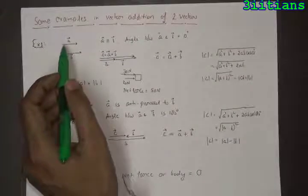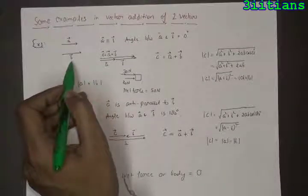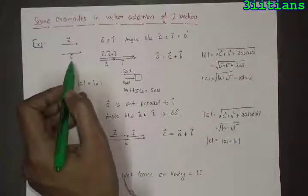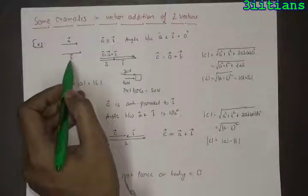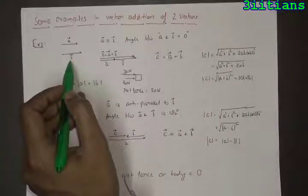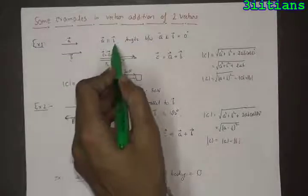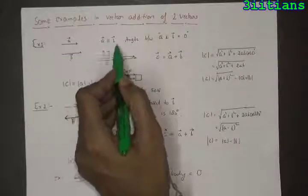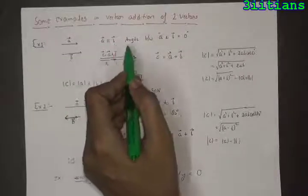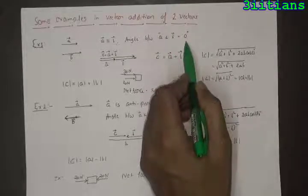Let us say there are two vectors, a vector and b vector, which are parallel to each other but have different lengths. Thus a vector is not equal to b vector because they have different magnitudes, but a vector is parallel to b vector. If a vector is parallel to b vector, the angle between a vector and b vector will be equal to 0.